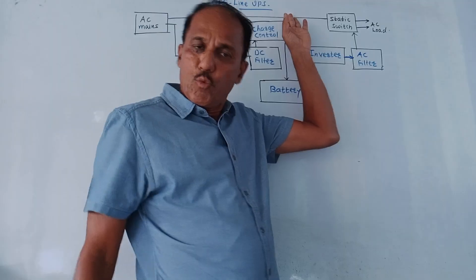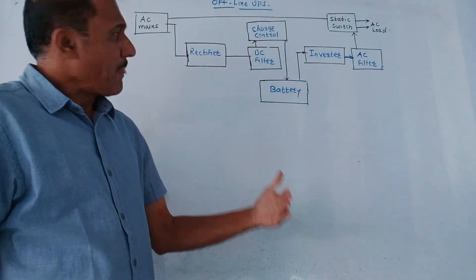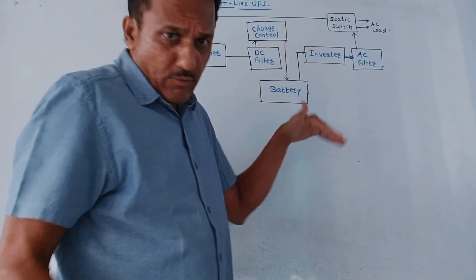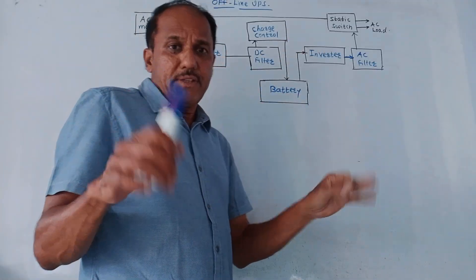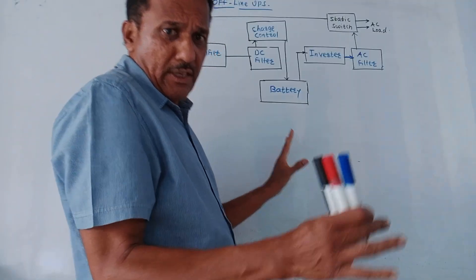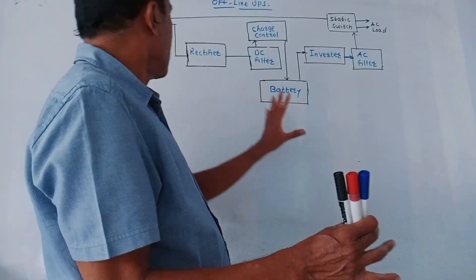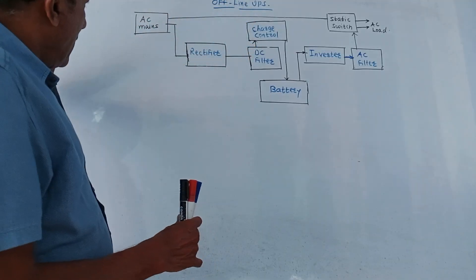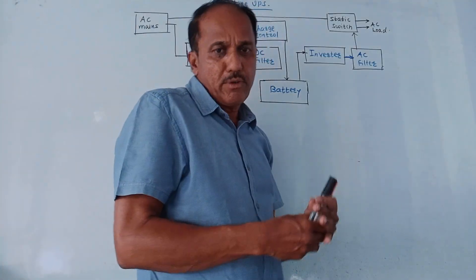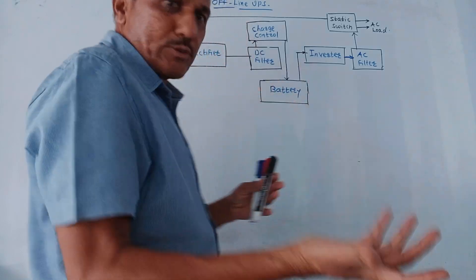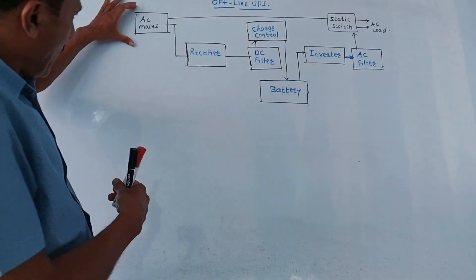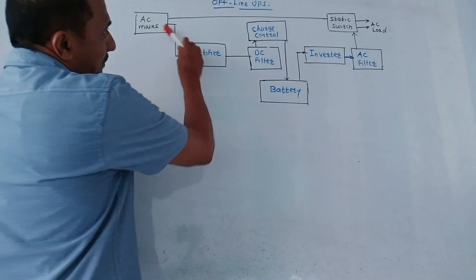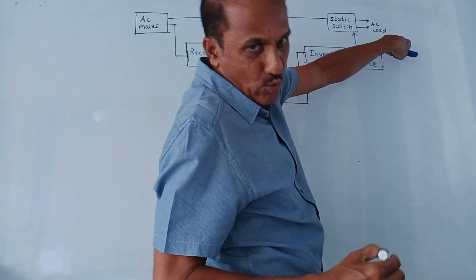The next part is offline UPS. As the name indicates, the inverter will be connected if and only if there is a failure of power. In normal operation there is no connection of the inverter. This is the block diagram of offline UPS, which is very similar to the online UPS block diagram with small differences. Under normal circumstances, AC mains is applied directly to the static switch and to the AC load.